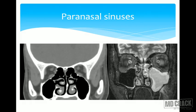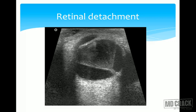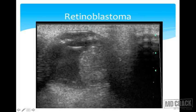For paranasal sinuses, X-rays are rarely used today; CT is the modality of choice. MRI is reserved for suspected malignancy or intracranial extension. For the eyes, ultrasound is excellent — it can evaluate retinal detachment, showing the retina and subretinal exudates clearly.